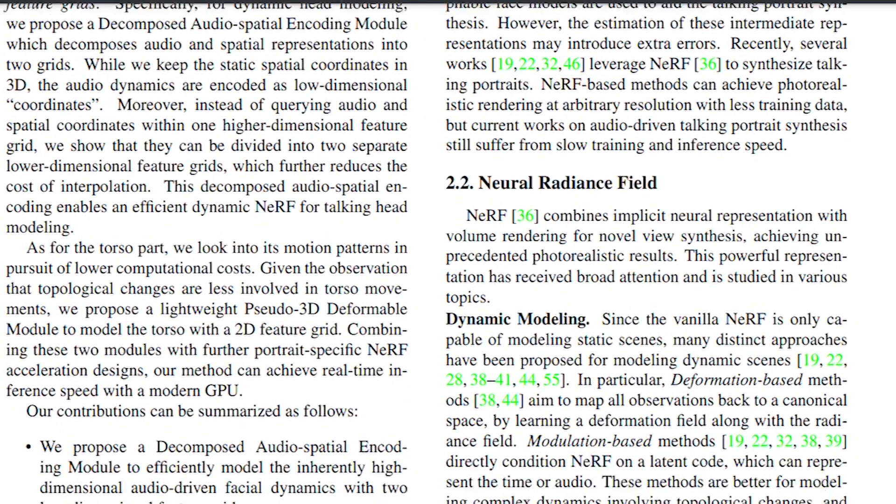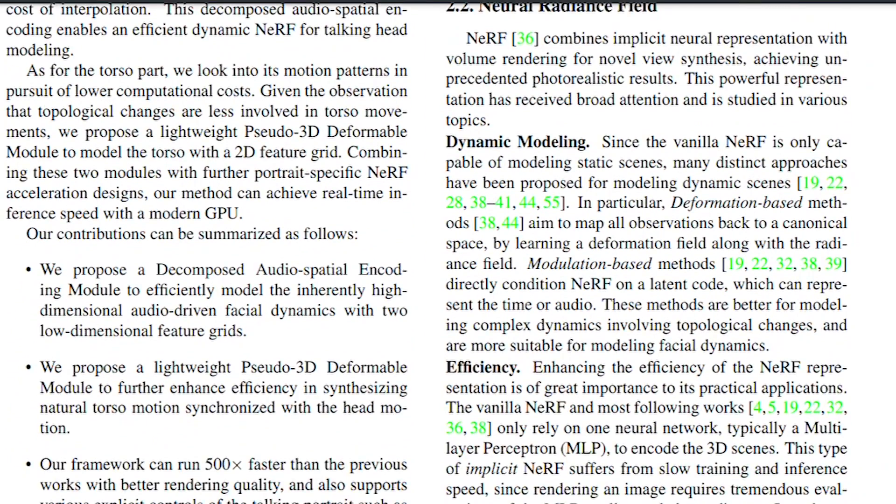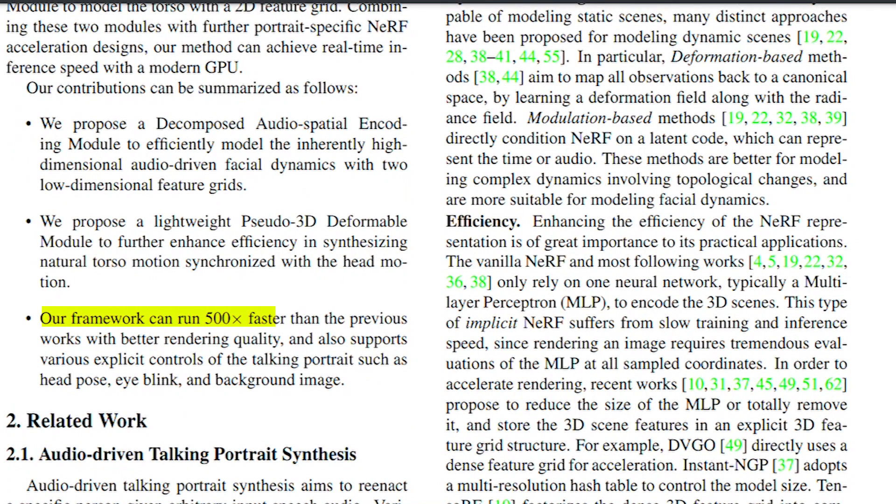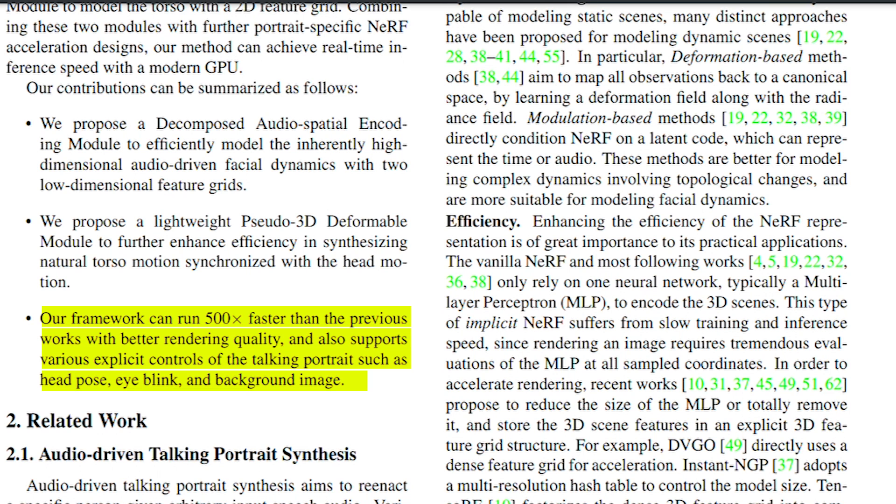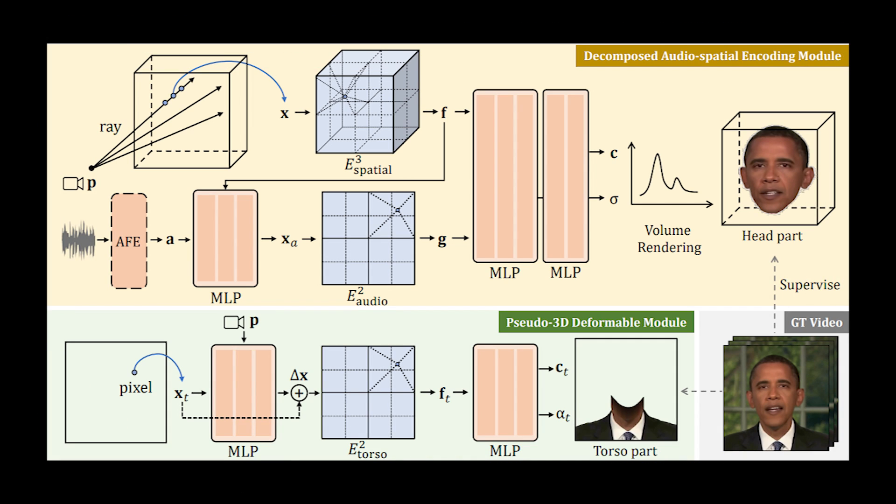As they state, their RadNerf model can run 500 times faster than the previous works with better rendering quality and more control. You may ask how is that possible? We usually trade quality for efficiency, yet they achieve to improve both incredibly. These immense improvements are possible thanks to three main points.